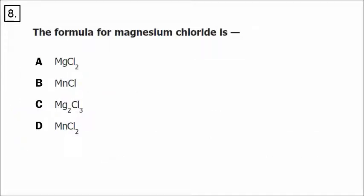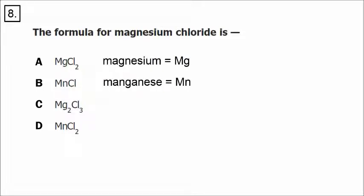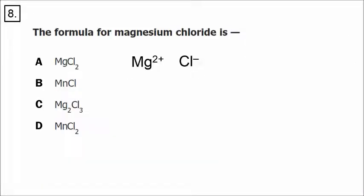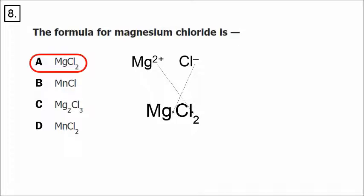In number 8, before writing the formula of magnesium chloride, we should know the difference between magnesium (Mg) and manganese (Mn). Based on the periodic table, magnesium is in group 2 — an alkaline earth metal with a plus 2 charge — and chlorine, a halogen in group 17, has a minus 1 charge. Using the crisscross rule, the 2 goes as a subscript outside the chlorine. The correct answer is A, MgCl2.